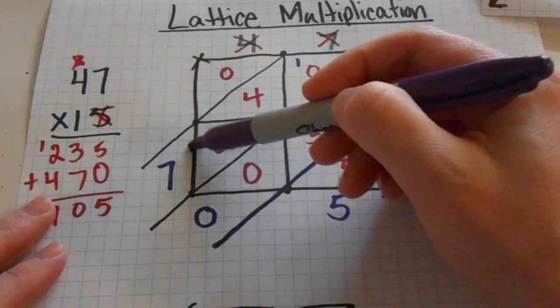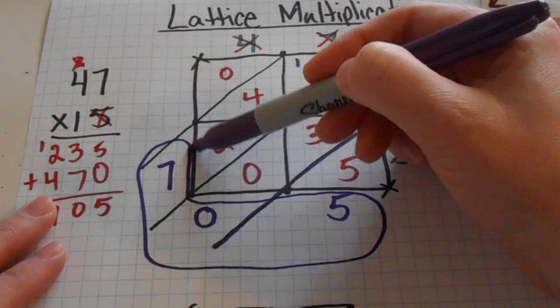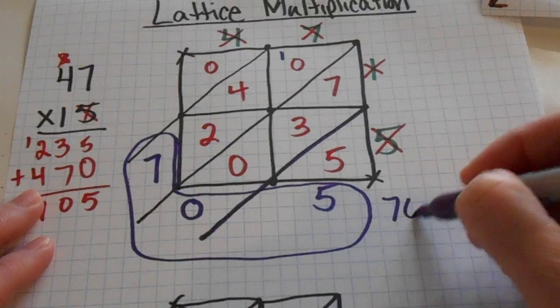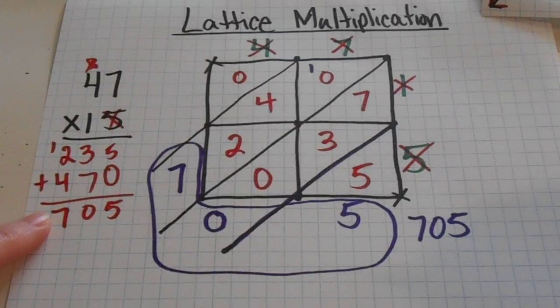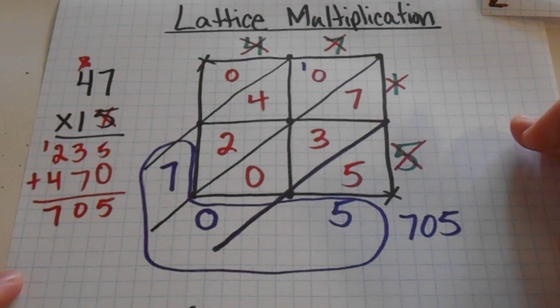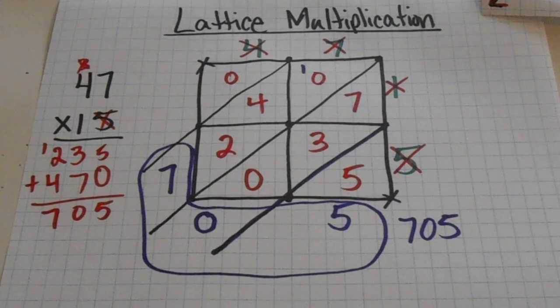705. Just like my product over here in this one. So that's how you do lattice multiplication. And thanks so much.